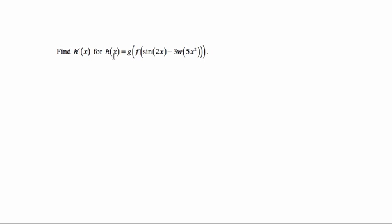So I want to find h prime of x where h of x is g of f of the quantity sine of 2x minus 3w of 5x squared, so w is actually another function. A lot of chain rule, a very complicated function. It's hard to imagine running into this in the street, but we'll see.